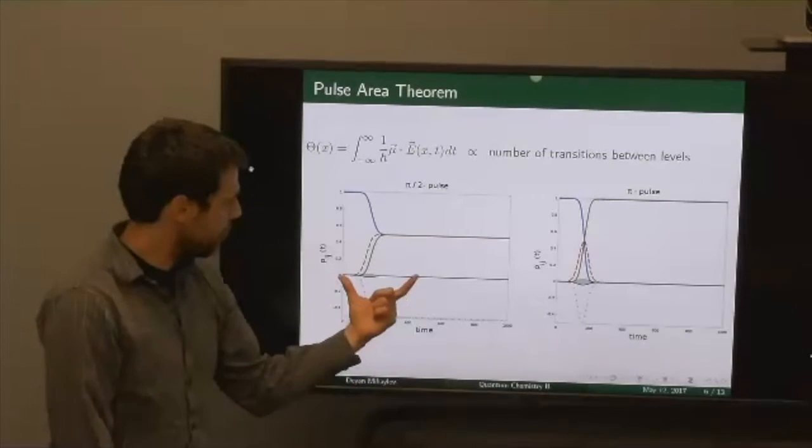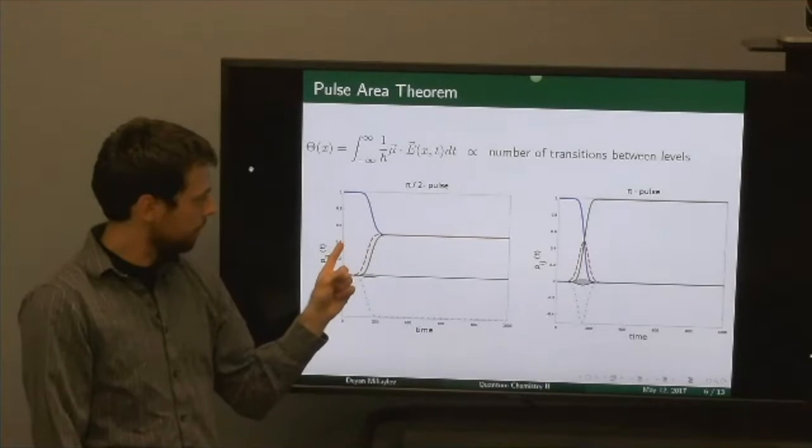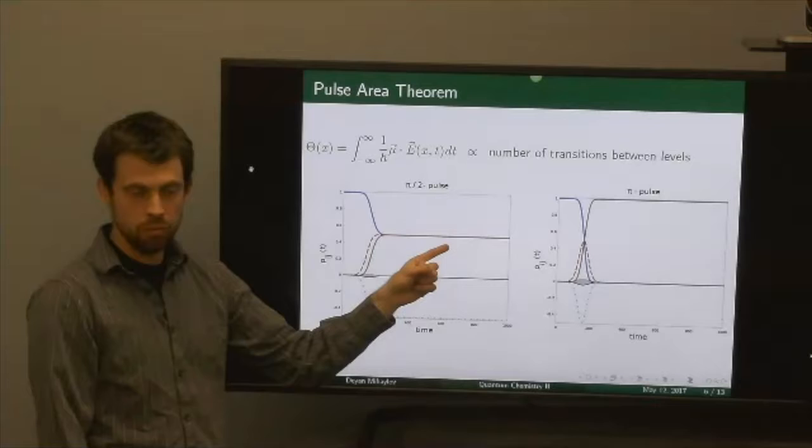So if you have, for example, a π/2 pulse, it's an important one because it drives the occupancies of the two levels to one half.